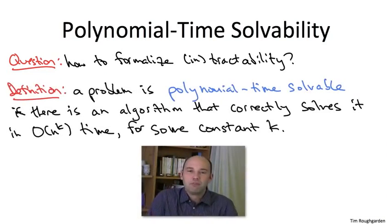So the definition's a bit of a mouthful, but it's sort of exactly what you would think it would be. So a problem is polynomial time solvable, naturally, if there's a polynomial time algorithm that solves it. That is, there's an algorithm, and there's a constant k, so that if you feed in an input of length n to this algorithm, then it will correctly solve the problem. Either it'll correctly answer yes or no, or it'll correctly output an optimal solution, whatever, correctly solves it in time big O of n to the k.